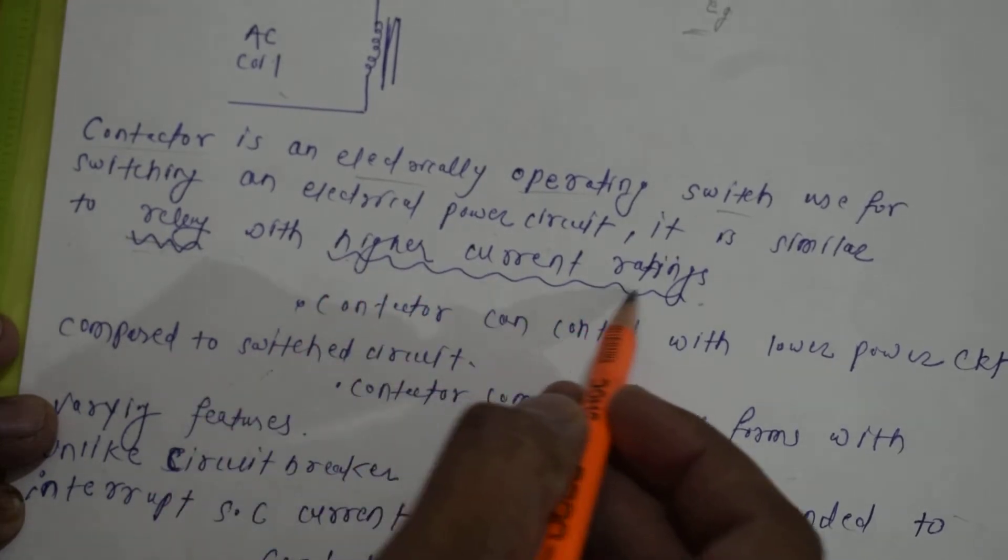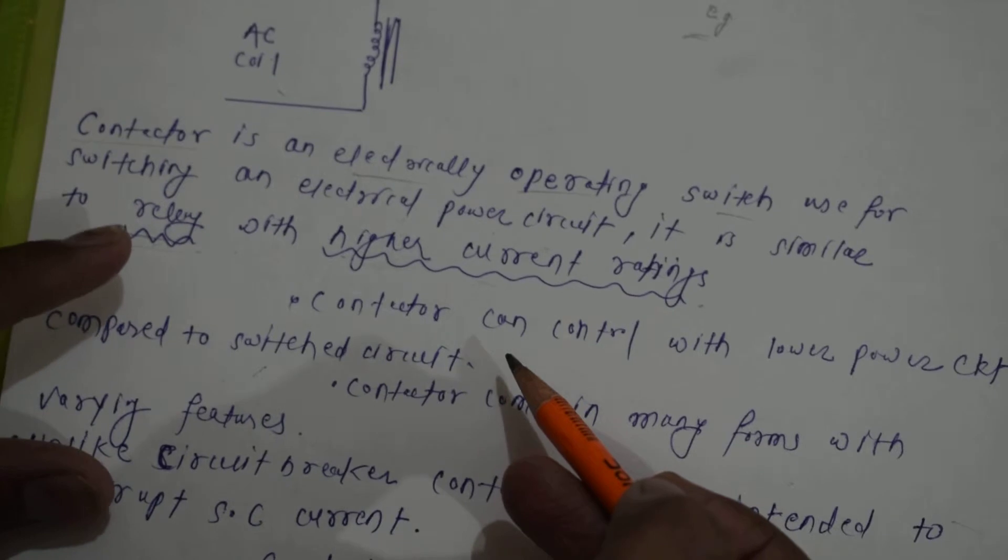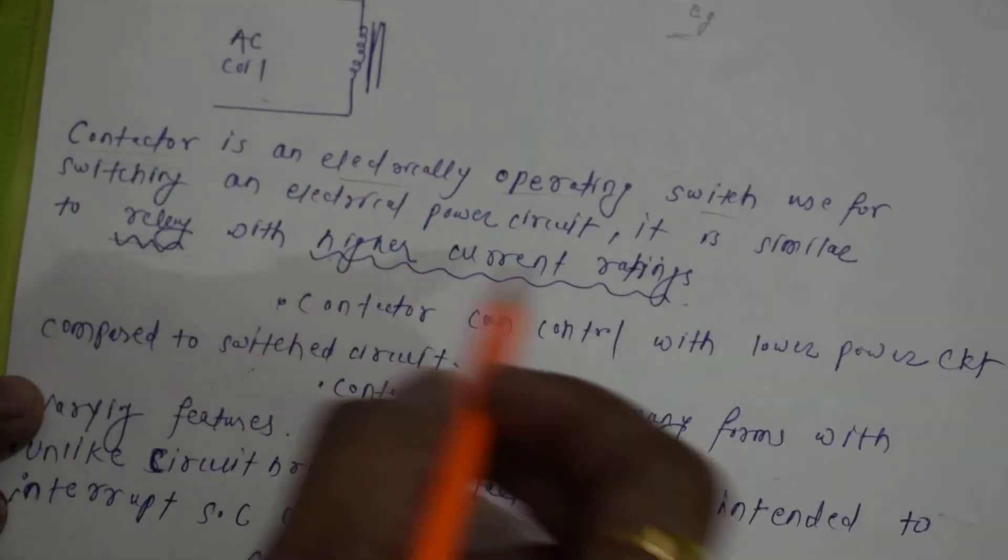If we take a switch, the current rating is very large. This is why we use the contactor instead of the switch.